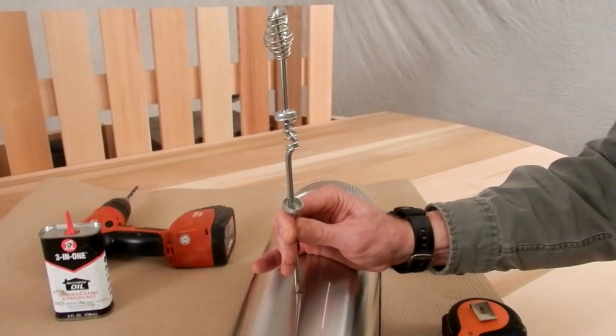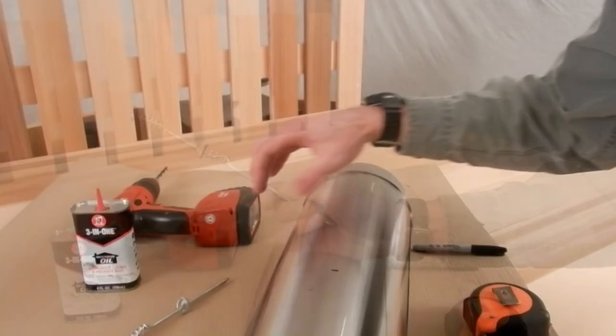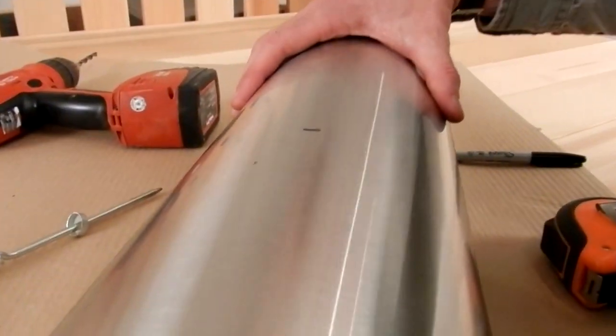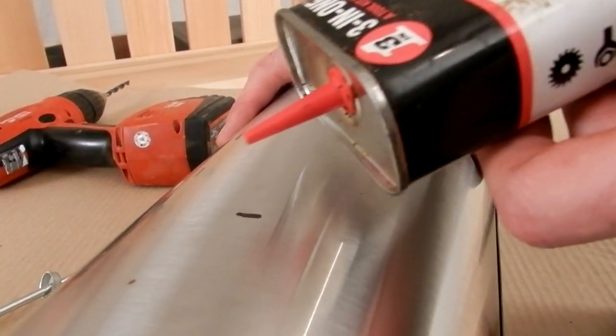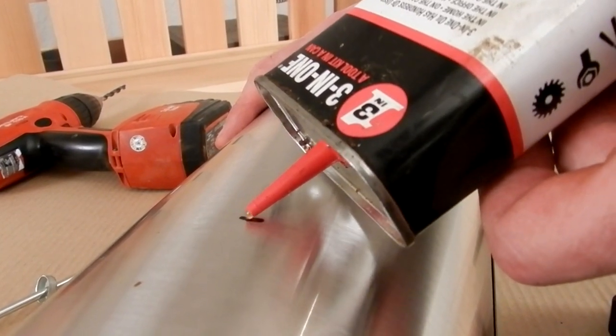This dent will be used to drill the first hole for the damper. We recommend using a multipurpose oil to help in the drilling process. Use a couple drops on the spot before proceeding.